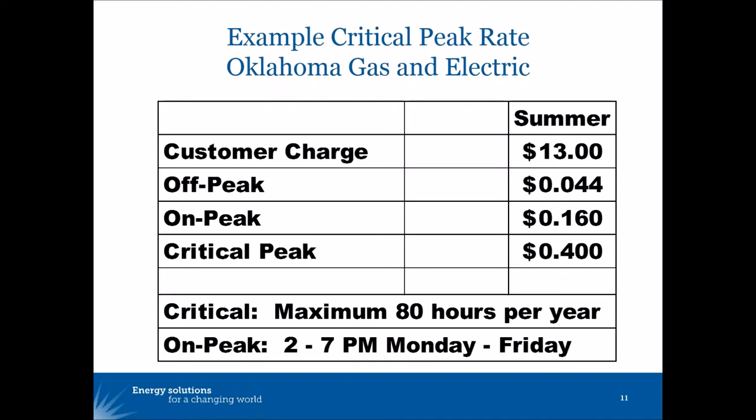This is an example from Oklahoma Gas and Electric of what's called a critical peak pricing plan, or critical peak rate. It's different in nature from the earlier examples of time of use rates because the rate for energy depends on the utility determining that there will be a critical peak event.